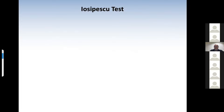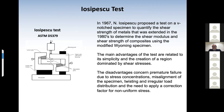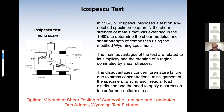The second test I will comment on is the Josipescu test, which is very well known. It was proposed in 1967 by Josipescu to quantify the shear strength of metals, and was extended in the 1980s to determine shear modulus and shear strength of composites using the modified Wyoming specimen. The main advantages are related to its simplicity and the creation of a region dominated by shear stresses. The disadvantages concern premature failure due to stress concentration from the gripping system, misalignment of the specimen, twisting, irregular load distribution, and the need to apply a correction factor for non-uniform stress.